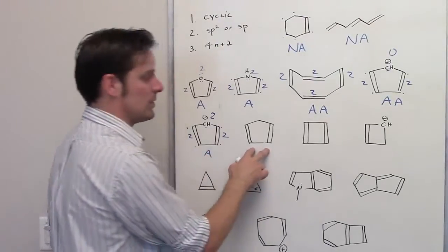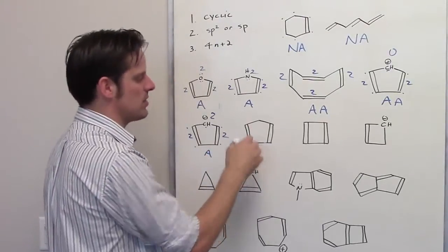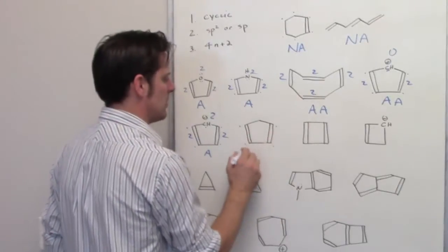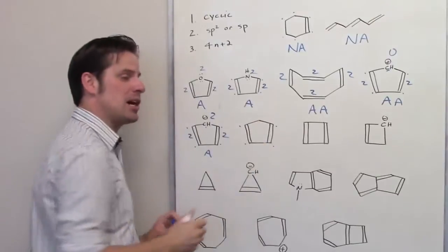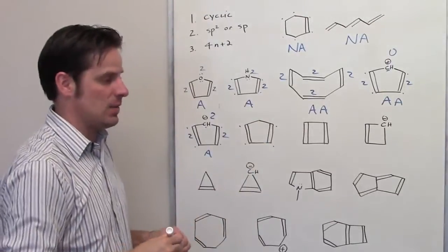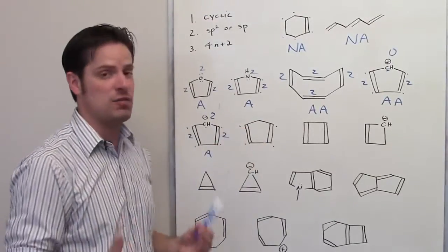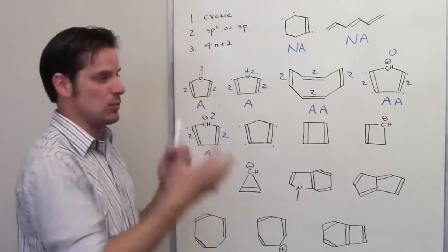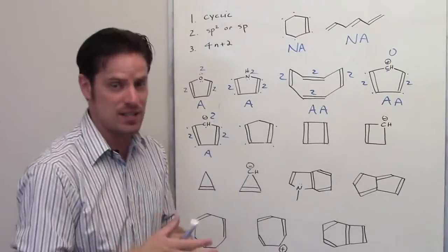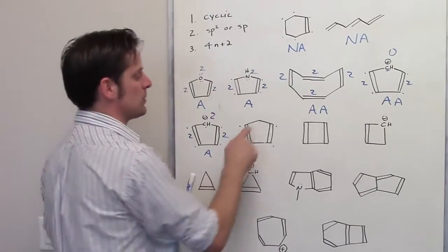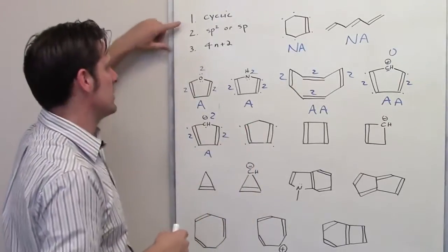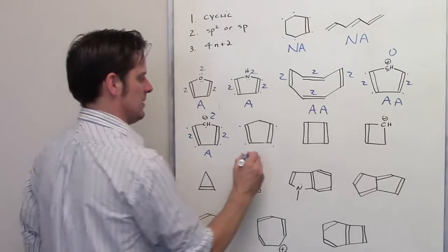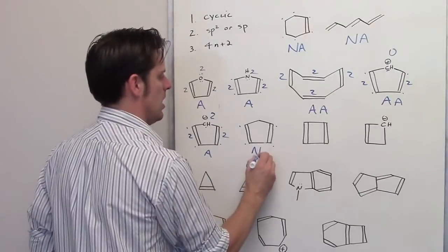Let's go to this molecule. Is it cyclic? Yes. Are all the atoms in the ring either sp2 or sp hybridized? There is a CH2 at the top — that's a carbon bonded to four things. None of them are lone pairs, which means it can't re-hybridize. It is sp3 hybridized. This molecule meets criterion 1, but not criterion 2, which means it is non-aromatic.